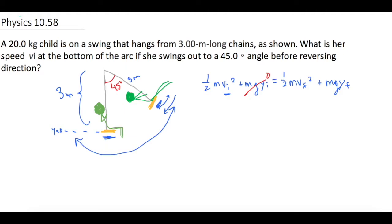At the end, when she's at the top of the swing, there is no velocity. We already talked about that. So that's also zero. So what we're left with is one-half mv initial squared equals mg delta y final.